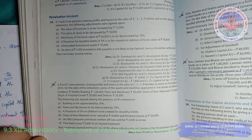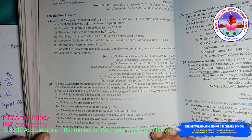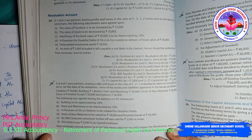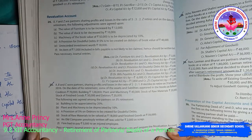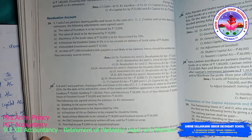Welcome all to the session. This session we are going to discuss the revaluation account problem under retirement or death of a partner. A, B, C are partners sharing profits and losses.